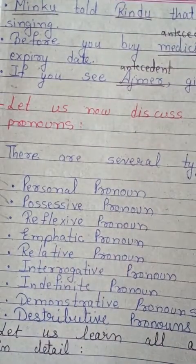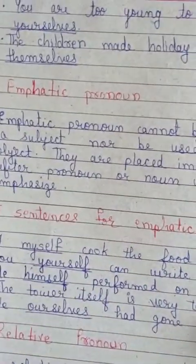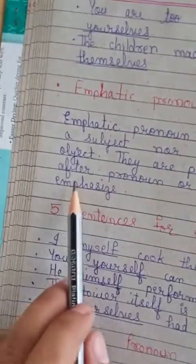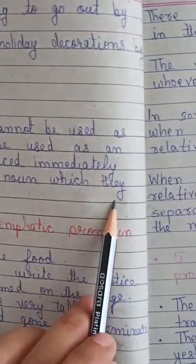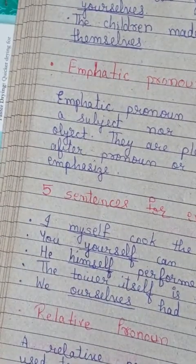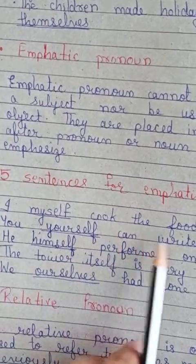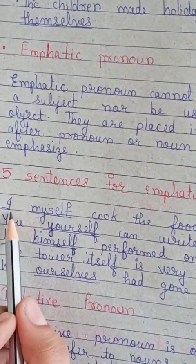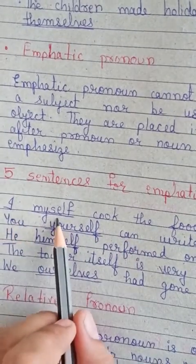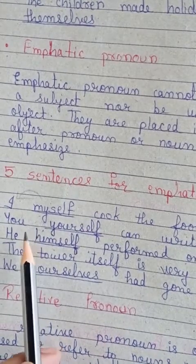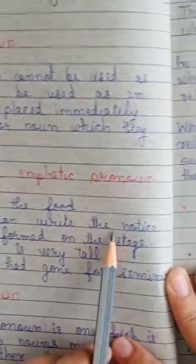The fourth one is emphatic pronoun. Emphatic pronouns cannot be used as a subject nor as an object; they are placed immediately after the pronoun or noun which they emphasize — putting extra pressure on one thing. For example: 'I myself cook the food.' We could simply say 'I cooked the food,' but saying 'I myself cooked the food' emphasizes the pronoun. Another example: 'You yourself can write the notice.'